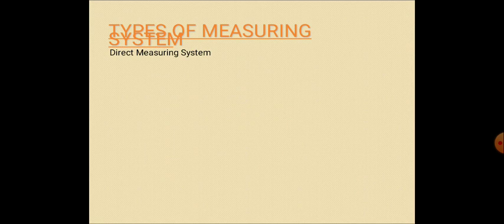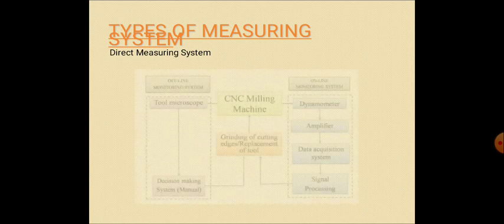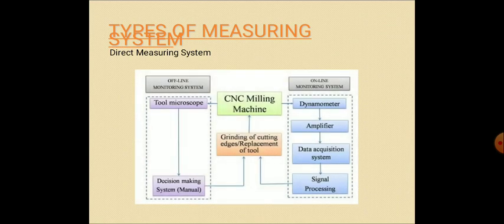In measuring systems there are two terms: accuracy, second one is the resolution. Next is the types of measuring system. First one is the direct measuring systems. In this we have two types: the offline monitoring system, then online monitoring system. In offline monitoring system uses the tool microscope to detect the required parameter manually and this is related to the grinding of cutting edges for the replacement of tool which are used in the CNC machine.